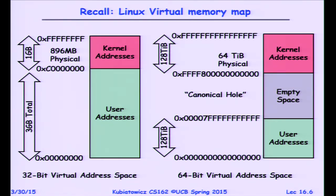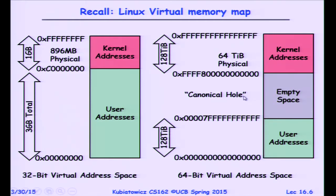There is a canonical hole in the 64-bit address space. The addresses on either side are sign-extended — these are the only memory addresses the hardware even recognizes. If you tried to use an address in the hole, you'd run into trouble. So there isn't actually 64 bits of virtual address space that the processor knows how to use.